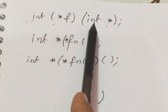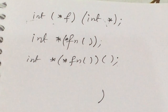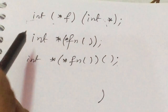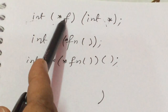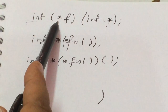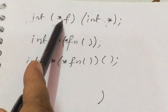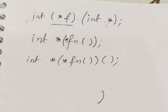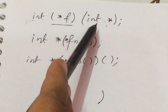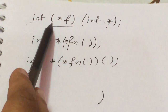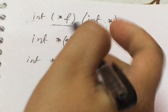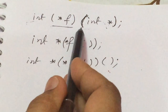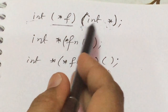So how are we proceeding? We are proceeding in a postfix manner. We find the identifier and say 'f is'. On the right-hand side of f there is nothing, so we go to the left and get 'pointer to'. Now we go to the right side of the outer group. Since there is a left parenthesis there, we cannot go further left, so we go to the right side and find the function parenthesis — this is the parenthesis of a function.